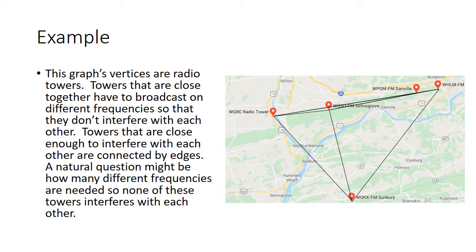Let's look at another example. Here the vertices are radio towers, and towers that are close together have to broadcast on different frequencies so they don't interfere with each other. Towers close enough to interfere are connected by edges. This is the actual Google map of nearby radio stations to the university. A natural question here is how many different frequencies are needed so that none of these towers interfere — since they're all connected, you need five different frequencies.